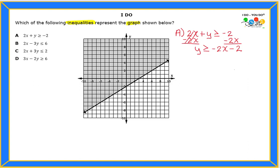So my first equation is y ≥ -2x - 2. From this I can identify the slope and y-intercept: the slope is -2 over 1, and the y-intercept is -2. The symbol I'm using is greater than or equal to, and 'greater than' means above the line.